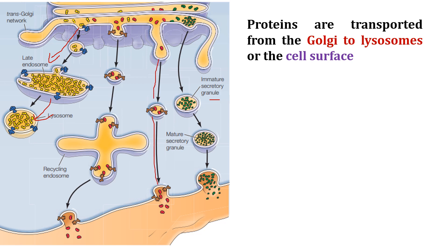The second route leads to continuous secretion of proteins from the cell, as well as the incorporation of protein lipids into the plasma membrane. Additionally, a protein can be transferred from the Golgi to the plasma membrane by recycling endosomes, which also act to recycle proteins to the cell membrane or plasma membrane.